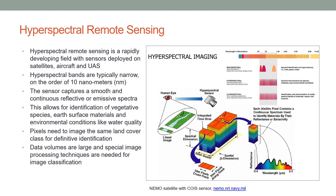The sensor captures a smooth and continuous reflective or emissive spectra, allowing for identification of vegetative species, earth surface materials, and environmental conditions like water quality. Pixels need to image the same land cover class for a definitive identification — you need a pure pixel of a particular land cover class for spectra to match exactly. Data volumes are large, and special image processing techniques are needed for classification of hyperspectral imagery.